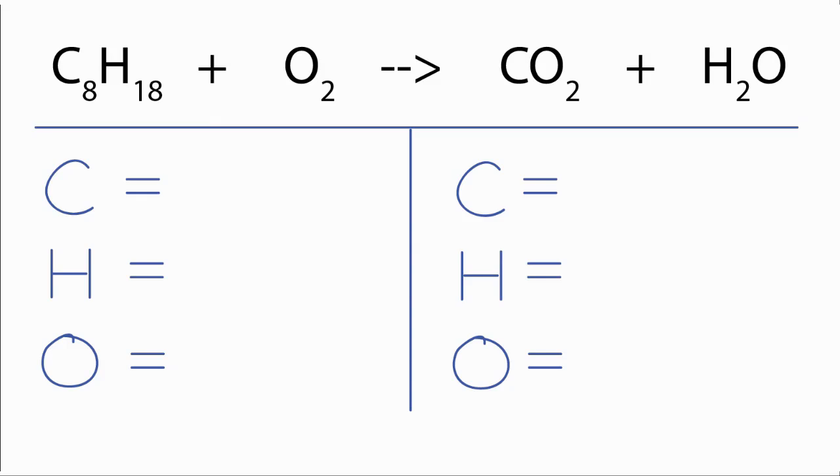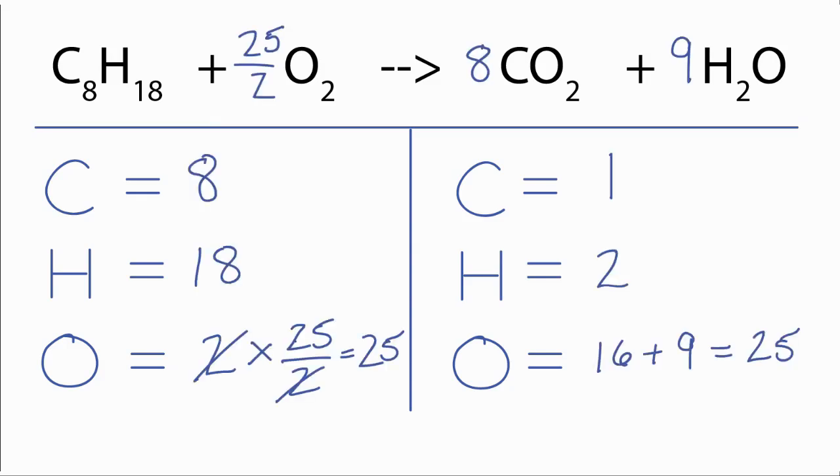So pause and try to balance this combustion reaction. You should end up with something that looks like this. And then, if we wanted to have whole numbers in our coefficients, we could multiply the entire equation by two. And that would give you coefficients of 2, 25, 16, and 18.